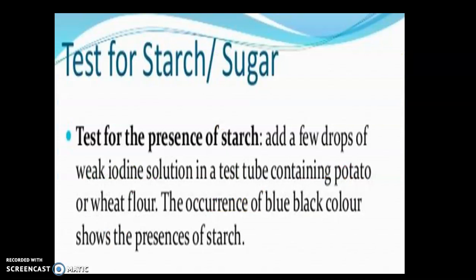We can also test for carbohydrates in school. To test for the presence of starch, take a potato — which is a best source of carbohydrates — cut it, and add a few drops of iodine solution. When the iodine solution is placed on the potato, its color turns blue-black, which shows the presence of starch. This is how a test for carbohydrates is done.